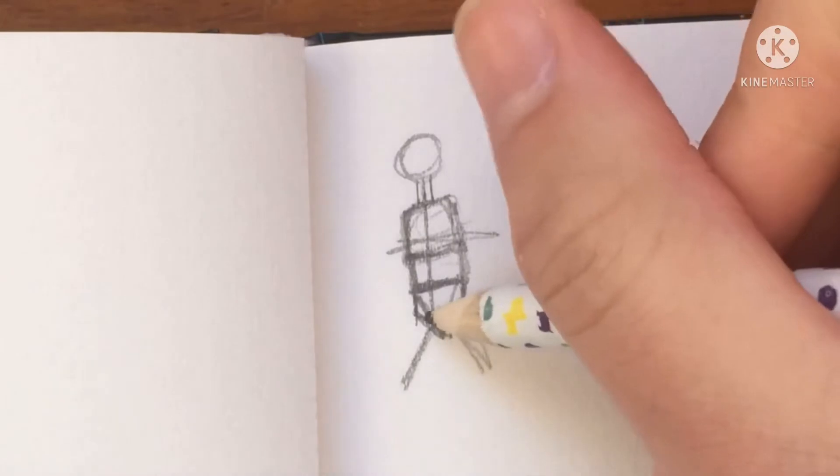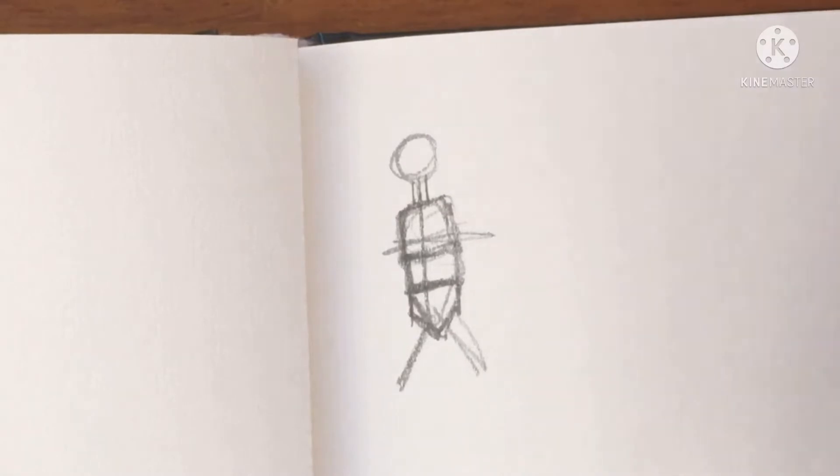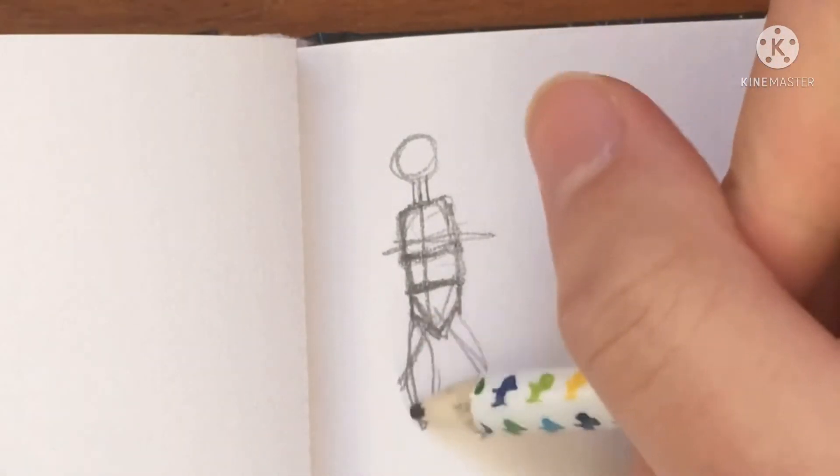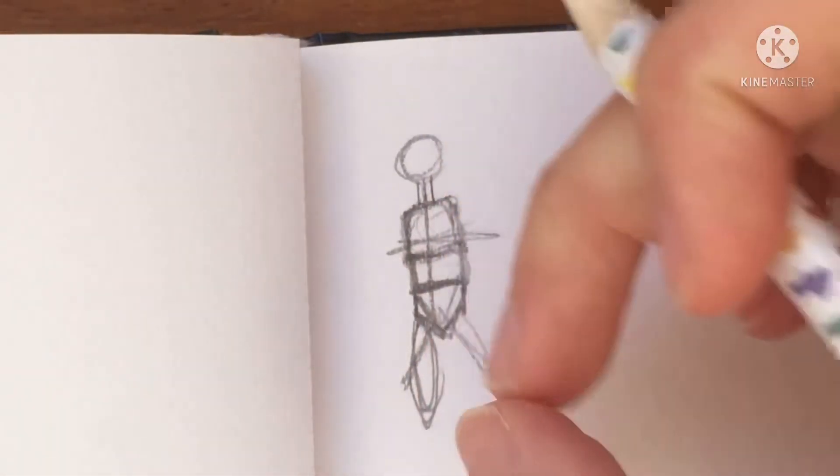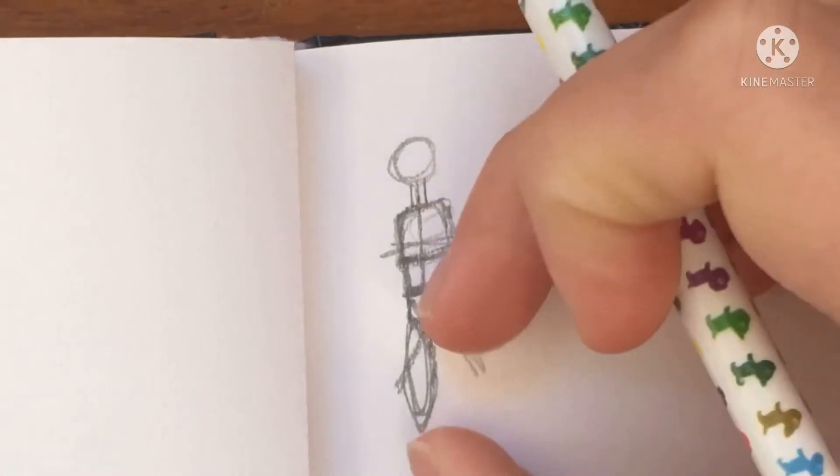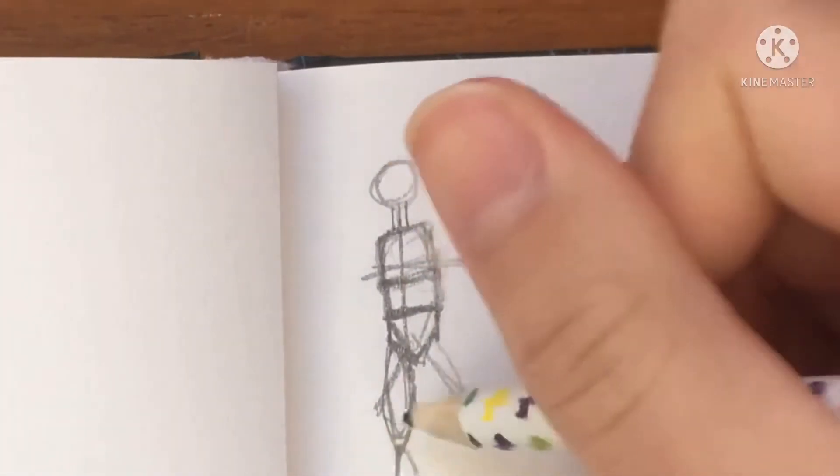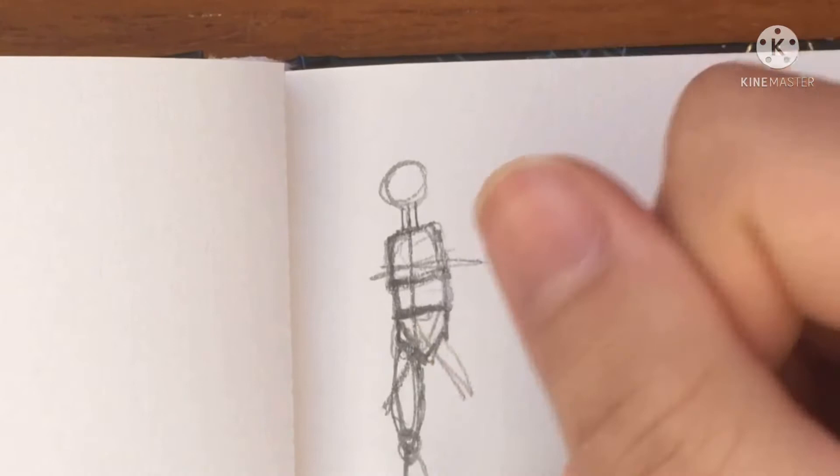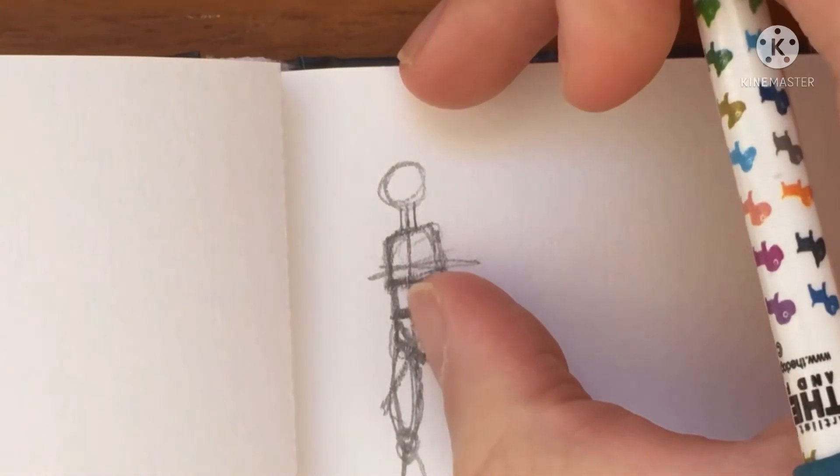One thing to note is that the legs are usually longer than twice as long as the rest of the body. So let's draw our thigh like about there. And then using my fingers, I'm going to use the thigh to figure out how long the calf should be. Just draw a little circle for the knee.